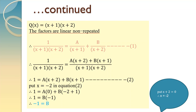Now the fraction was 1 upon x plus 1 into x plus 2. So we will split it up into two fractions — one will have denominator x plus 1 and the other will have denominator x plus 2. Whenever the denominator is linear, the numerator should be constant. Here we have chosen A and B. You can choose P, Q, A1, A2, anything. So that will form our equation 1.